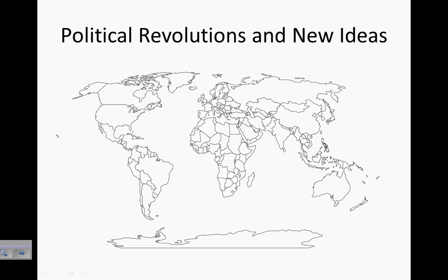With political revolutions, there were some new ideas, and I want to pinpoint some of the major areas where this happened. First, around 1776, the American Revolution in the American colonies. In 1789, the French Revolution. In 1781, the Haitian Revolution in Haiti, just near Cuba, down south of Florida. And in 1811, the Venezuelan Revolution in the north part of South America.